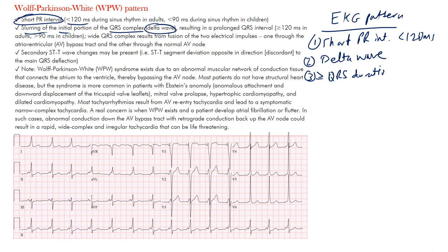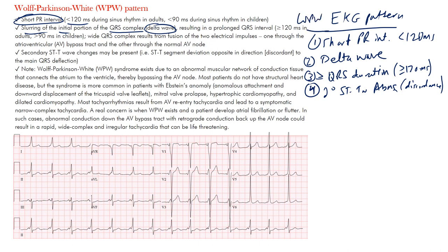The delta wave results in a prolongation of the QRS complex — an increase in QRS duration — tending to be at least 120 milliseconds wide in adults. This wide QRS results from fusion of two electrical impulses: one going through the AV bypass tract and one through the normal AV node. You'll also have secondary ST-T wave abnormalities, including what we call discordance.